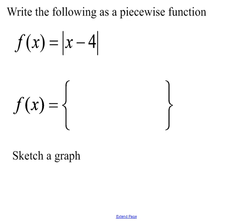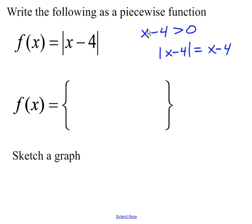Now I'll write the absolute value of x minus 4 as a piecewise function. When x minus 4 is greater than 0 — that is, when x is greater than 4 — the absolute value of x minus 4 equals x minus 4, since we get a positive number. Testing with x equals 5: |5 − 4| = 5 − 4, which checks out.